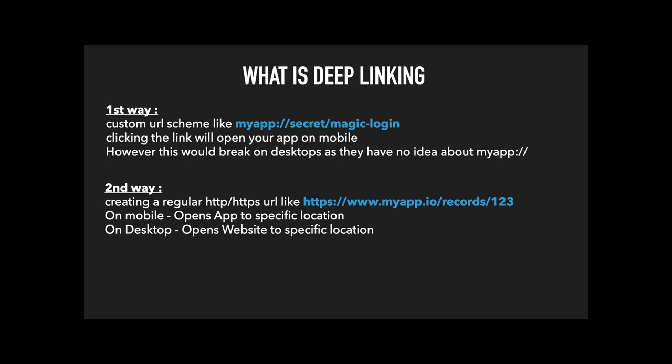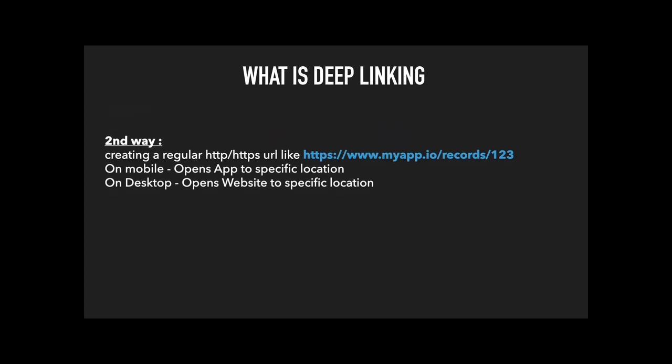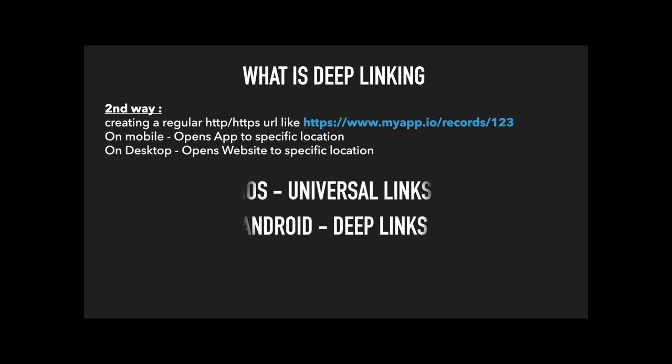The second approach uses a regular HTTP or HTTPS URL that on desktops opens the website as expected, but on mobile opens the app to the specific location. This second way is known as Universal Links on iOS and App Links on Android, and is often the preferred way of deep linking. The naming for Android is slightly confusing because the first custom-scheme method is also commonly called deep linking.